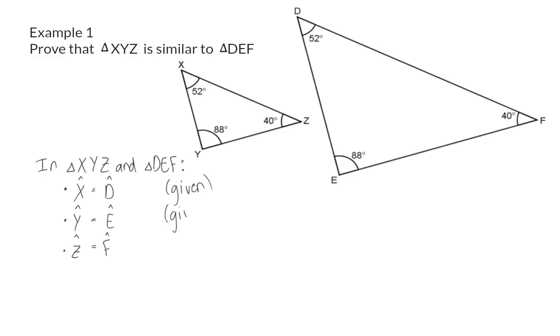For all three of these, the reason will be that it was given to us. Now we can make the conclusion that triangle XYZ is similar to triangle DEF. Again, you now need to make sure that the order of the corresponding angles are correct.